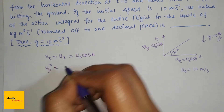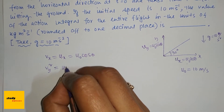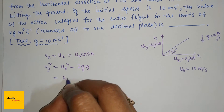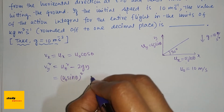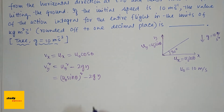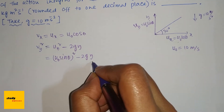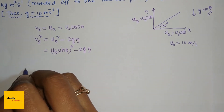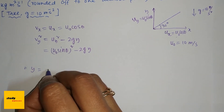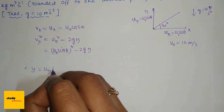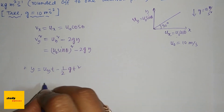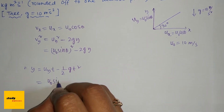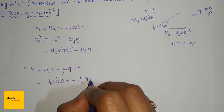Using kinematics: v_y² = u_y² − 2gy, where u_y = u₀ sin θ, so v_y² = (u₀ sin θ)² − 2gy. We also need the displacement y, which is given by y = u_y·t − ½g·t², that is y = u₀ sin θ · t − ½g·t².